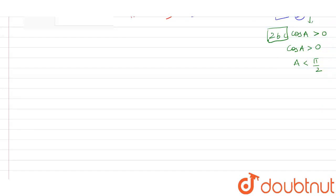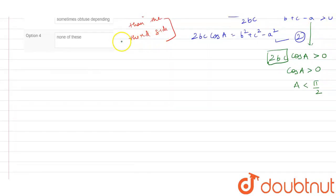Similarly, we can find out the values for angle B, it will also be less than pi by 2. And for angle C, it will also be less than pi by 2.